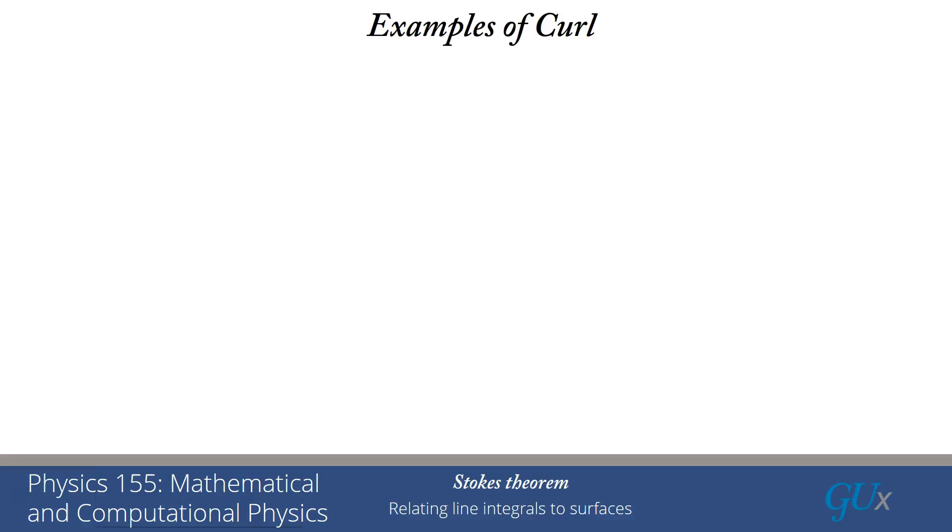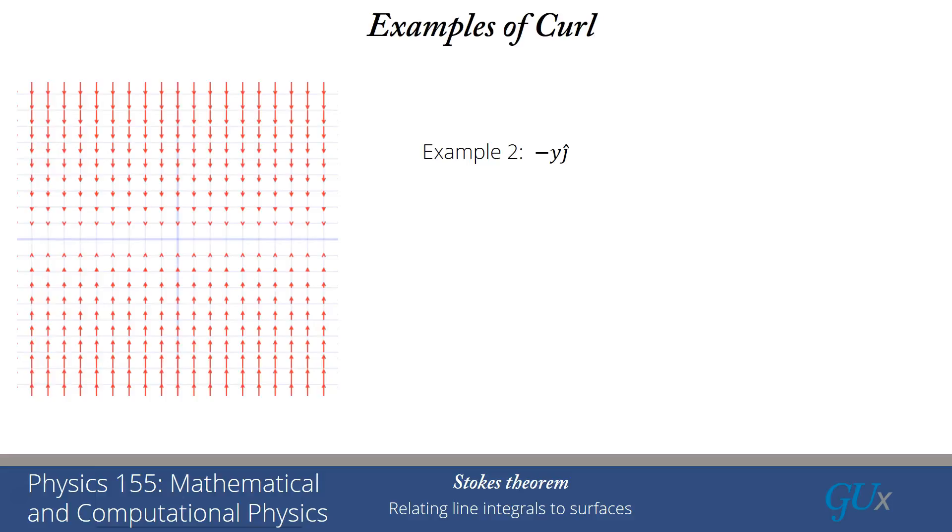Let's look at another example. This example is minus y times j hat, the unit vector in the y direction. I have these vectors that increase the farther away I get from the x-axis, and they all point toward the x-axis. Anyone who's looking at this says this doesn't rotate, except possibly something weird happening at the x-axis where the direction changes sign.